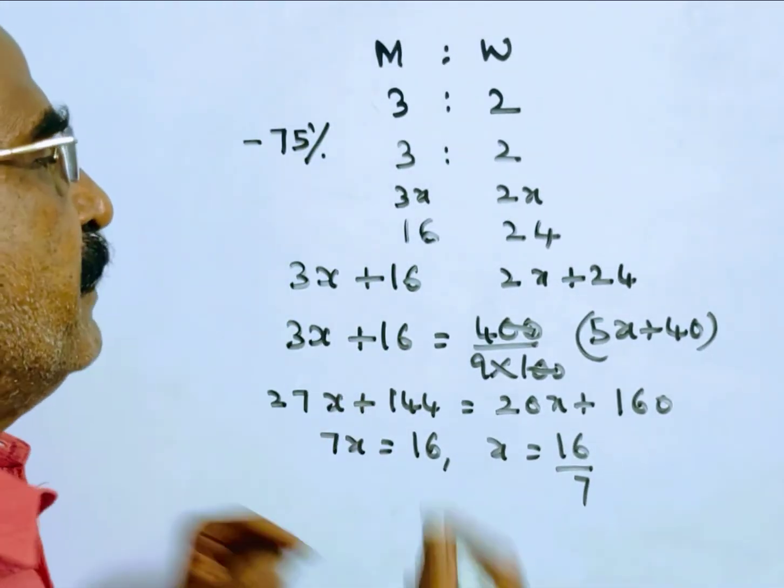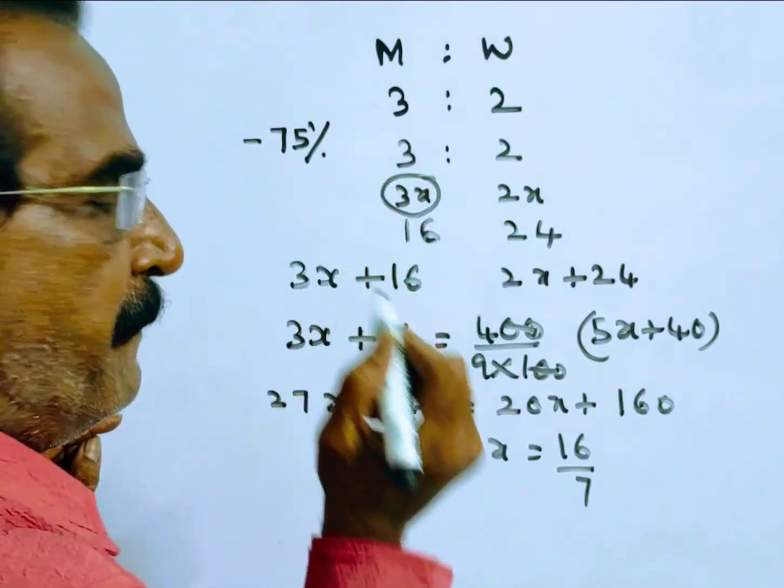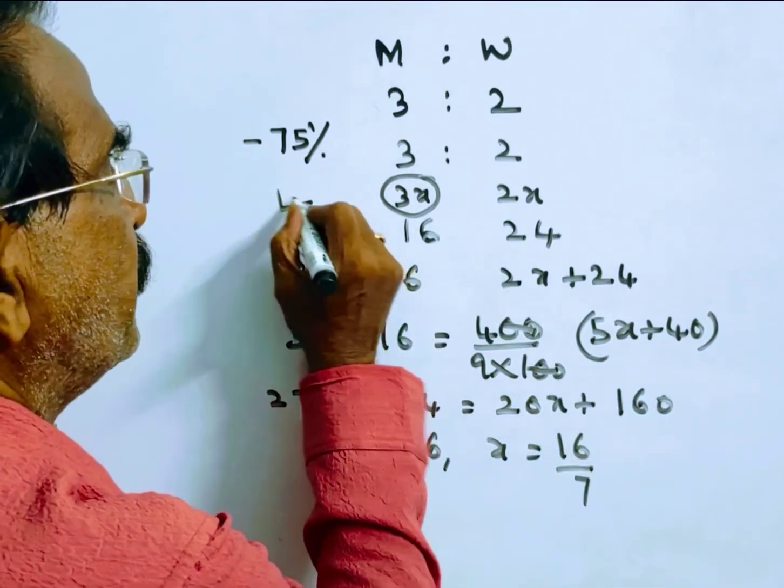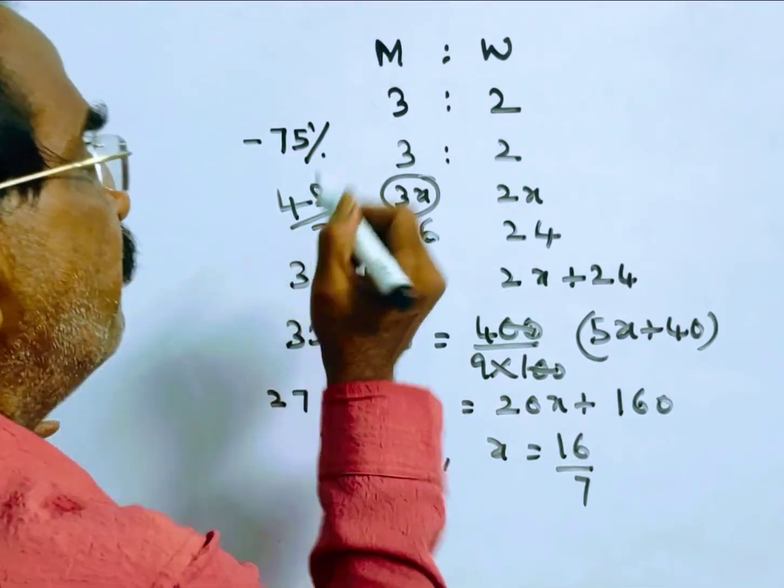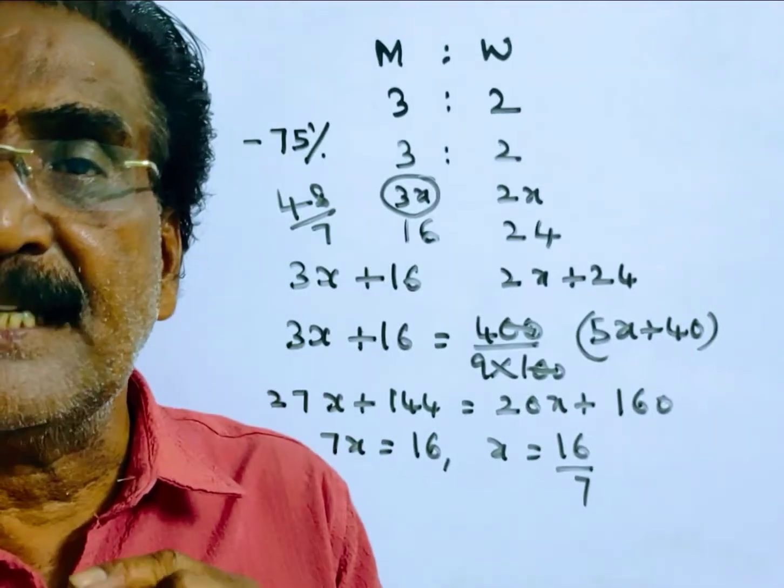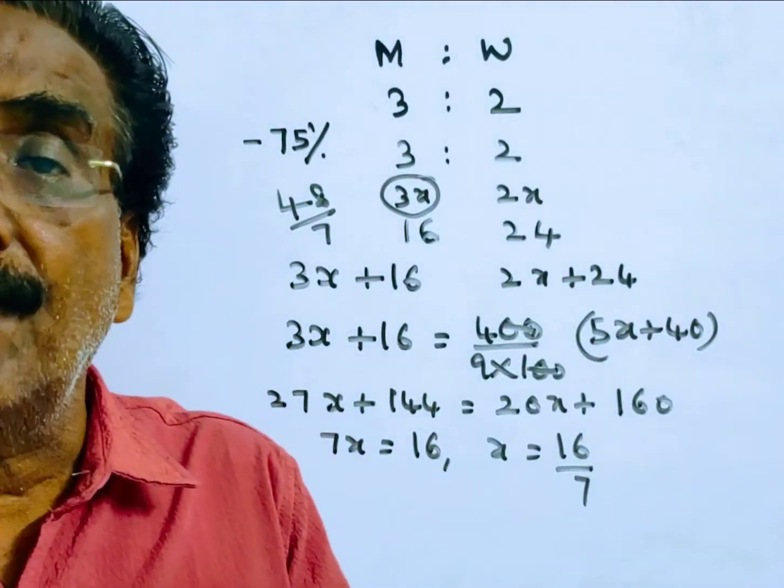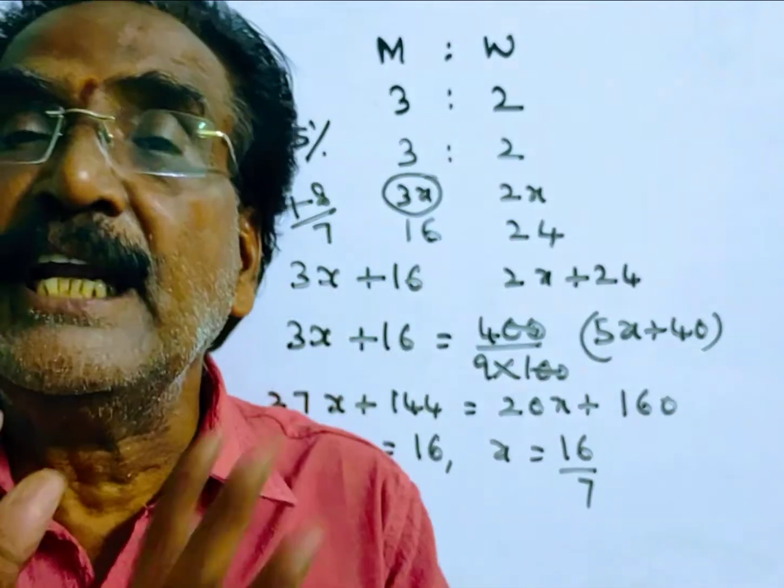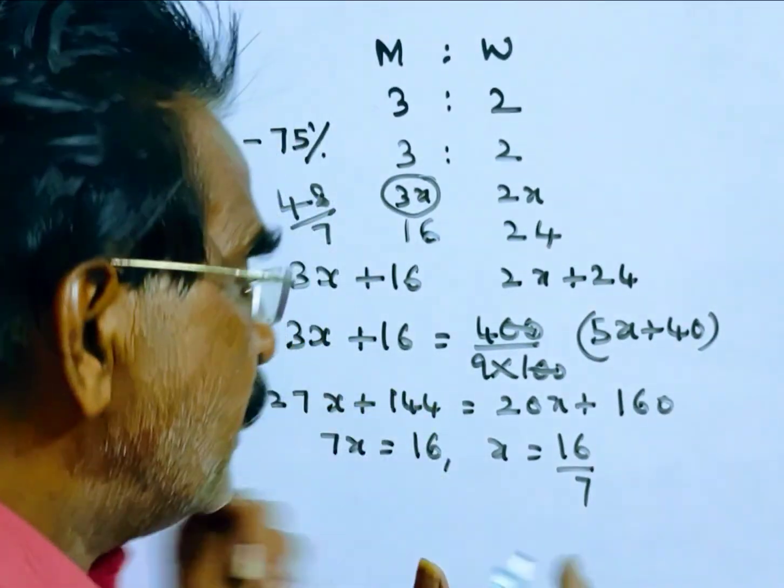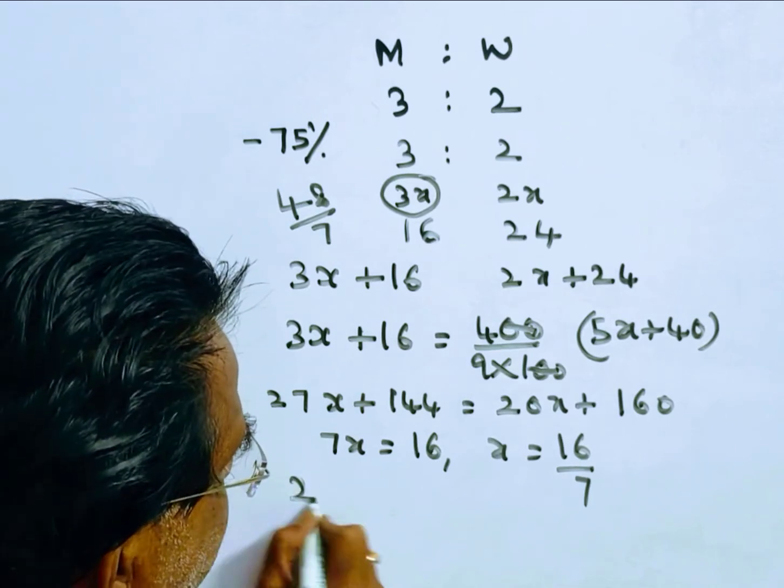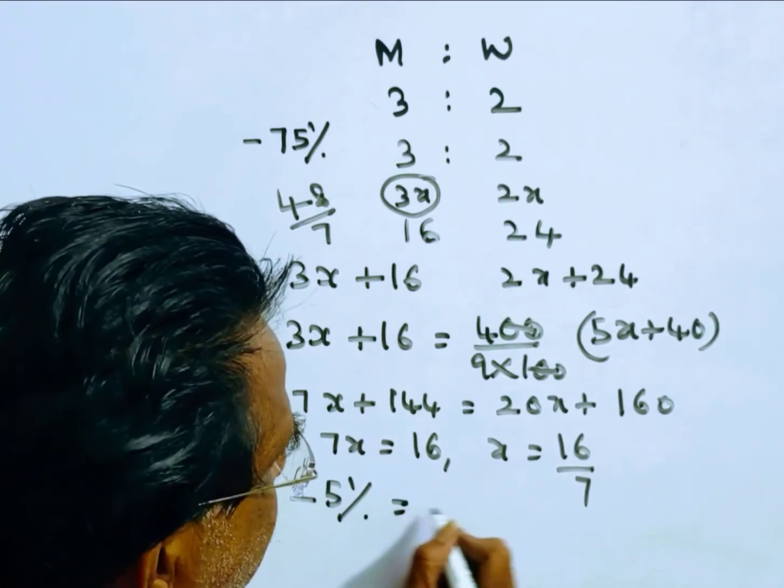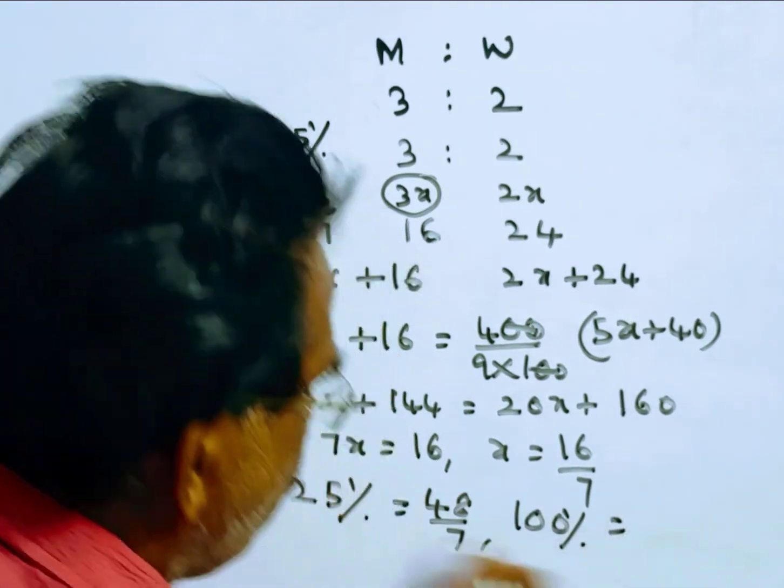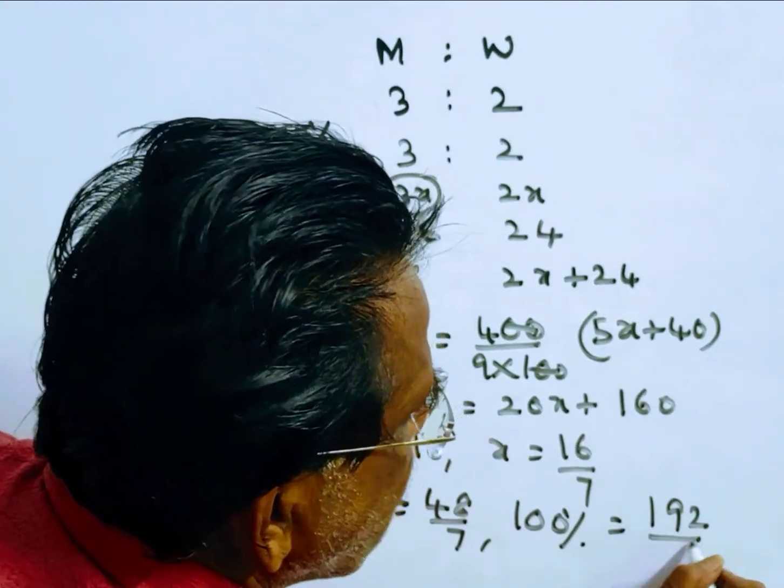Friends, x is equal to 16 by 7 implies 3x, the quantity of milk after drawing 75% of the mixture. 3x is 48 by 7. Friends, this 48 by 7 is after drawing 75% of the mixture. That means this 48 by 7 is 25% of the total quantity of the milk. 25% of the milk is 48 by 7. Now we want the quantity of the milk, that is 100%. For 25%, it is 48 by 7, so 100% is 192 by 7 liters.